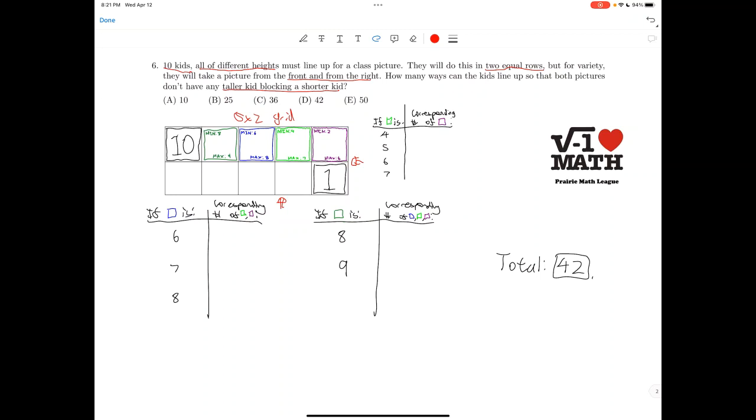So the key thing to realize is that if there's a kid here, he has to be taller than this person here and this person here. But this person has to be taller than this person here. So out of all these 4 spaces, this kid has to be the tallest. And by quite a similar argument, we can also show that this kid has to be the shortest among these 4 kids.